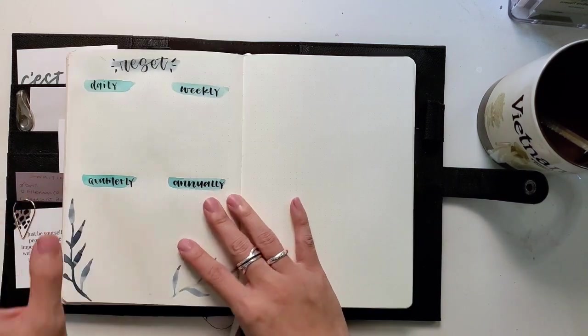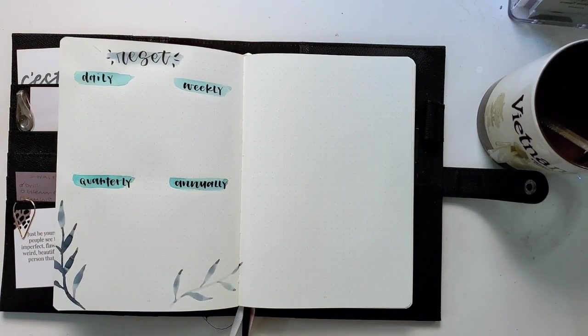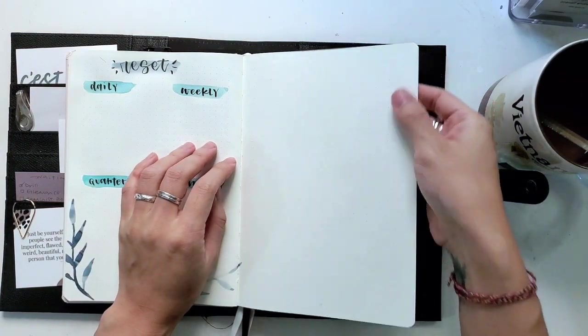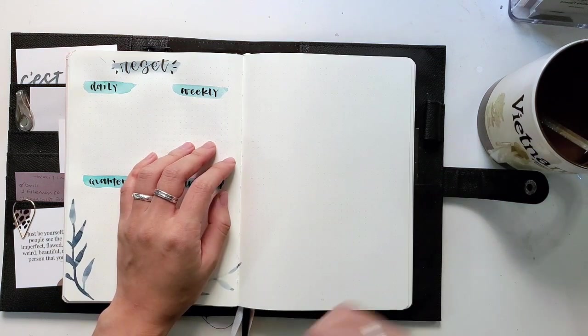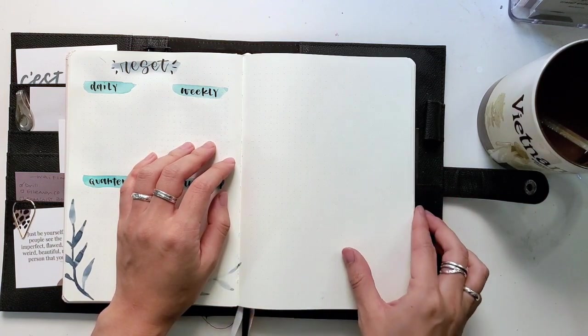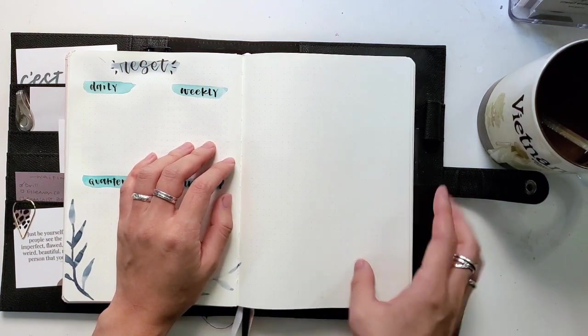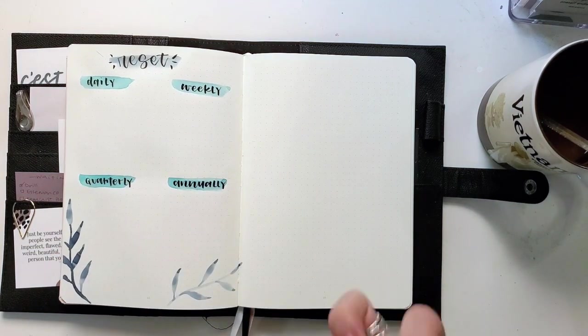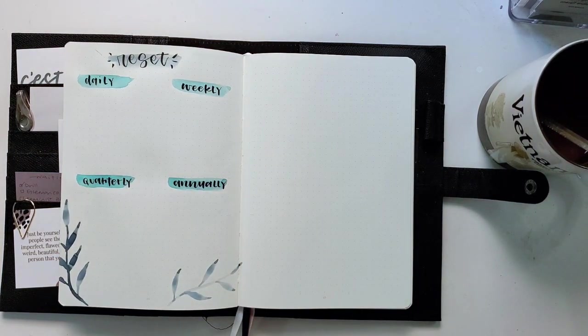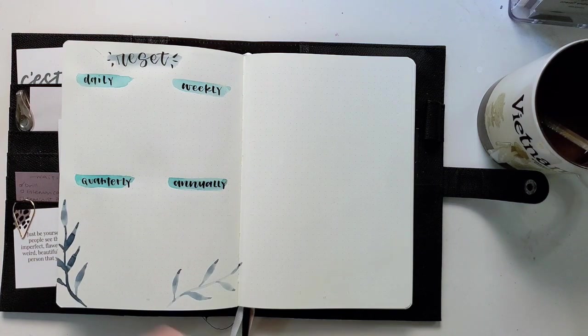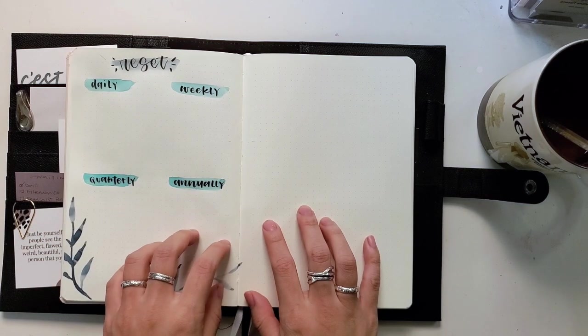So this might make me go back to using the Leuchtturm now that I've used it for a little bit here. The pages are just thick enough. They aren't as thick as the Archer and Olive, but I actually kind of like that you can flip through and it still gives you that page turning a little bit used feeling, but it's not as flimsy and thin as the last.